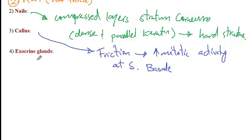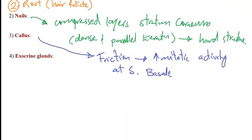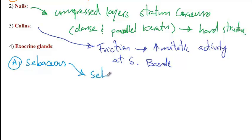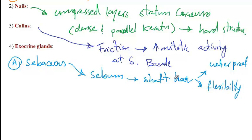Exocrine glands are all located in the dermis layer and receive nutrients from the nearby vasculature. The first type is sebaceous oil glands, which produce an oily substance called sebum. Sebum is secreted at the shaft of the hairs to make them waterproof and to give them flexibility, preventing them from becoming brittle.